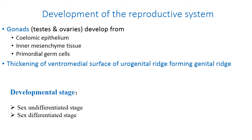The reproductive system — the gonads — develops from the coelomic epithelium, mesenchymal tissue, and primordial germ cells. The reproductive system develops from the thickening of the ventral medial surface of the urogenital ridge, forming the genital ridge. Development of the reproductive system consists of two stages: the undifferentiated stage, equal for both sexes, and the differentiated stage, which differs in male and female.